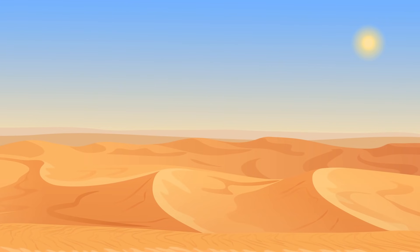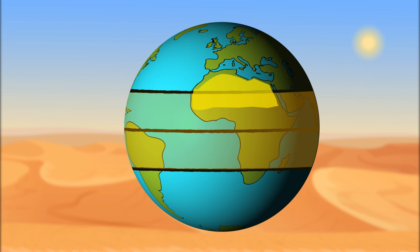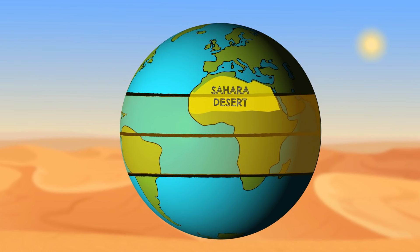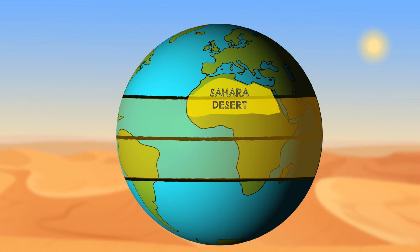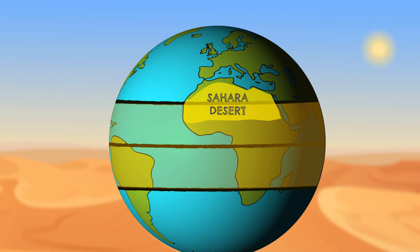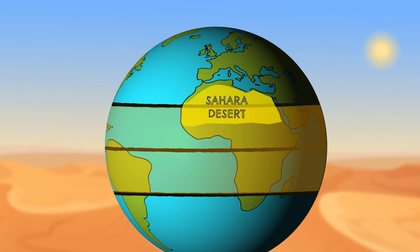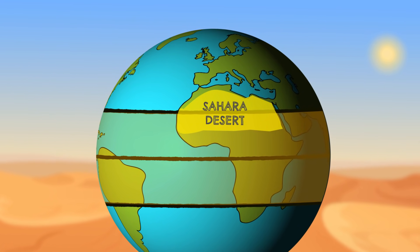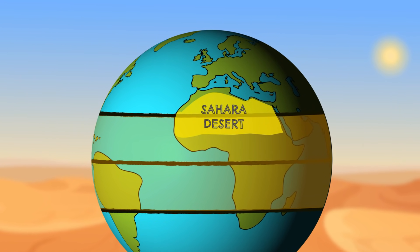Now keep in mind that climate depends on many other things, and there are dry areas like the Sahara Desert even within the rainy tropics, but latitudes can still help predict the climate trend of a region.